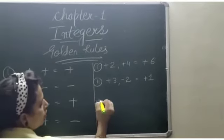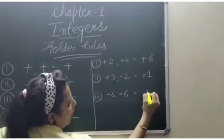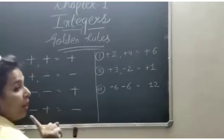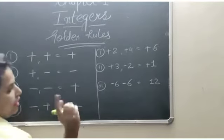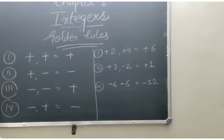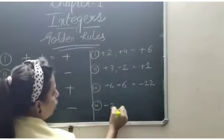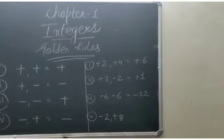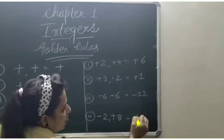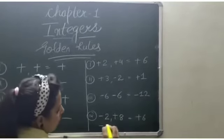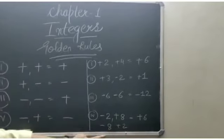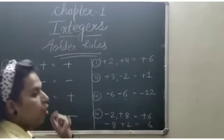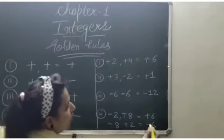Third one: minus 6 minus 6 — you will have 12, but as minus minus is equal to positive, the sign will be of the greater number, so minus 12. The last one is minus 2 plus 8: plus minus is minus, so 8 minus 2 is equal to plus 6. And suppose minus 8 plus 2 — again plus minus is minus, it would be 6, but the sign will be of the greater number, so it will be minus 6.